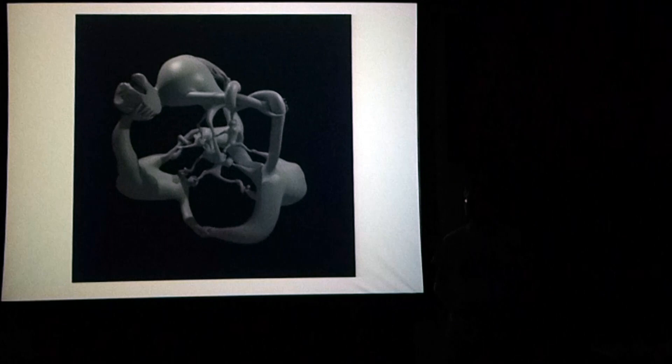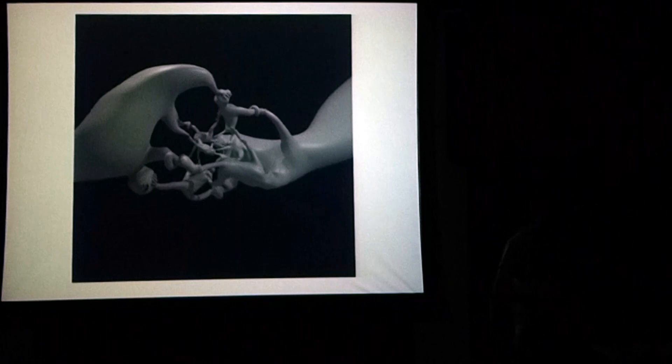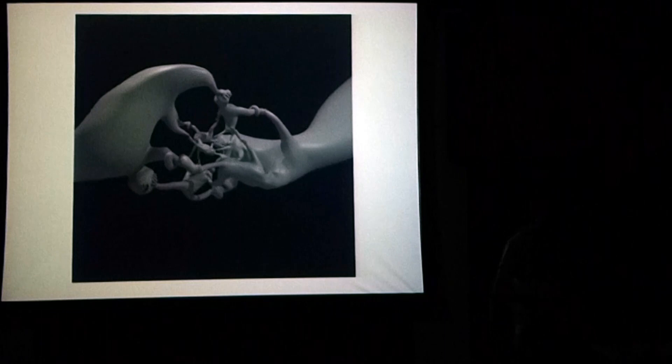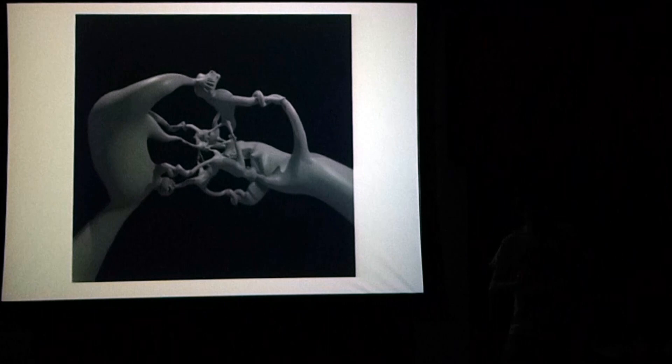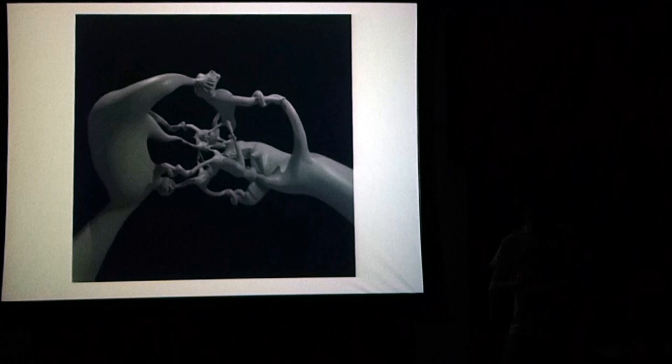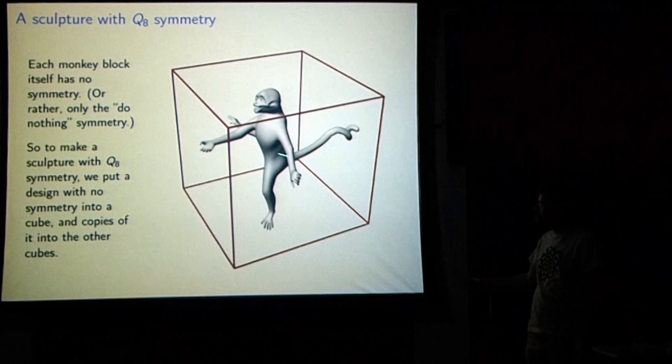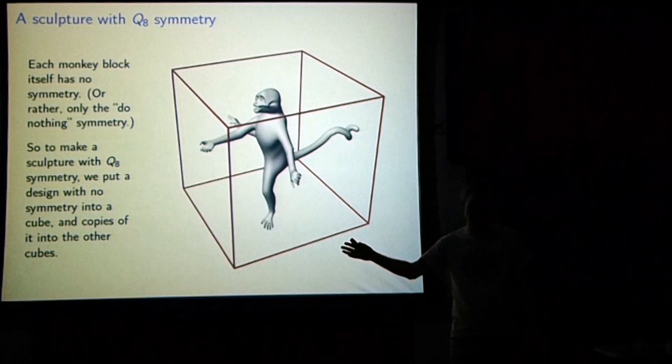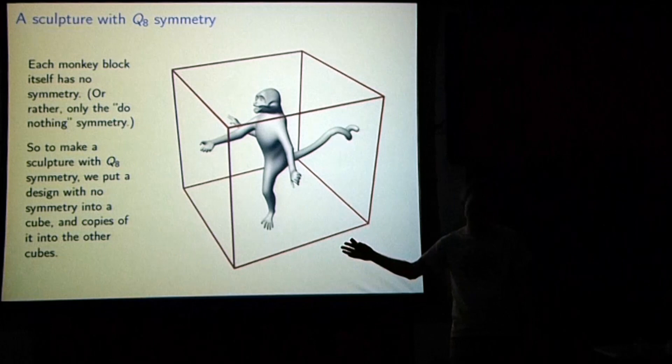Have you tried this with other things besides monkeys? Monkeys are the only possible choice — I'm deadly serious. I've got to put a design in here which has no symmetry. If it had symmetry, the object I'd produce would have more symmetry than the group I'm trying to show. And as far as I'm aware, this is the first sculpture in the existence of the planet which has had this symmetry — nobody's done this before.